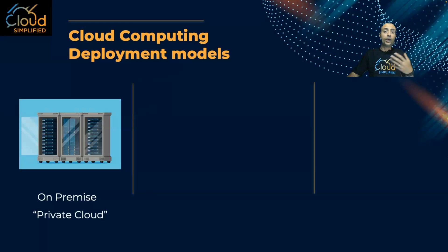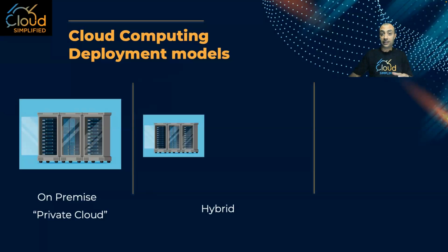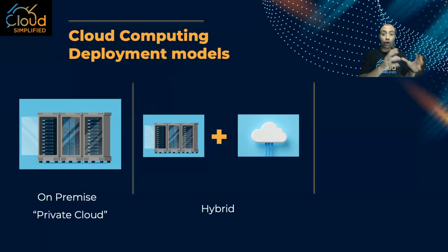With time, organizations realized the benefits of cloud, and that's why in order for them to migrate, they cannot migrate just in one shot. That's why the second model is what we call the hybrid model. In the hybrid model, I have my physical on-premise data center and then I migrated some other applications on the public cloud. So right now I'm running in a hybrid mode, which means some applications and workloads are running on-premise but I migrated other applications and workloads to the public cloud.